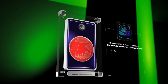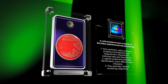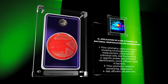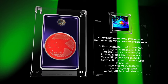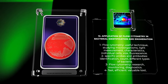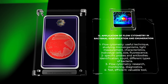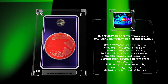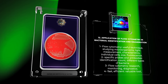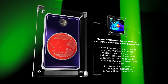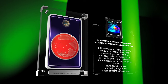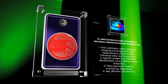Flow cytometry is a useful technique for studying microorganisms. It uses light to measure characteristics of individual cells, such as size and fluorescence. By using specific probes and antibodies, we can identify and count different types of bacteria. Flow cytometry is used in many areas, including research, monitoring, and diagnostics. It is fast and efficient, making it a valuable tool for studying bacterial populations.